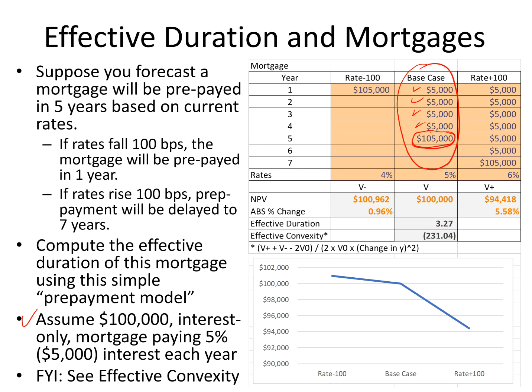That is the base case scenario. If interest rates fall 100 basis points, I'll assume they mail the money back in one year and I get just one year of interest. If rates increase 100 basis points, they hold the mortgage a bit longer — maybe seven years. This is my prepayment model: rates down 100 basis points means a one-year prepayment; rates up 100 basis points means a seven-year prepayment; base case is a five-year instrument.